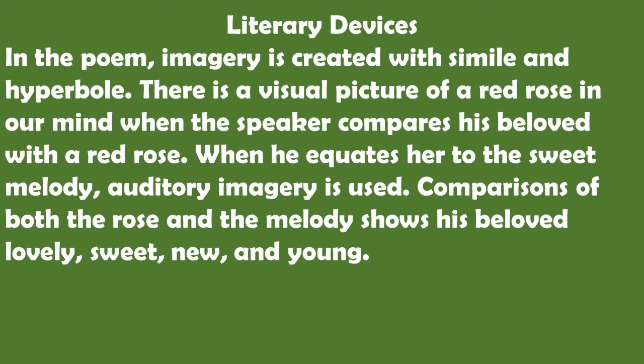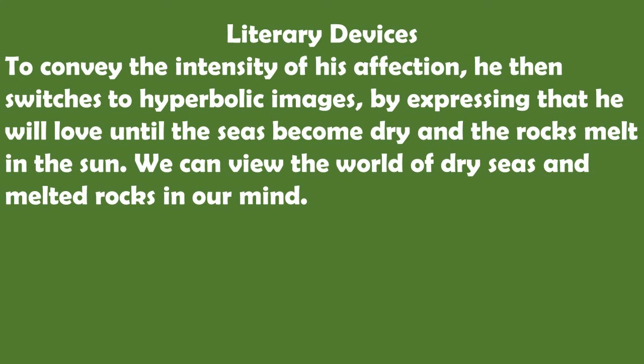In the poem, imagery is created with simile and hyperbole. There is a visual picture of a red rose in our mind when the speaker compares his beloved with a red rose. When he equates her to the sweet melody, auditory imagery is used. Comparisons of both the rose and the melody show his beloved as lovely, sweet, new, and young. To convey the intensity of his affection, he then switches to hyperbolic images by expressing that he will love until the seas become dry and the rocks melt in the sun. We can view the world of dry seas and melted rocks in our mind.